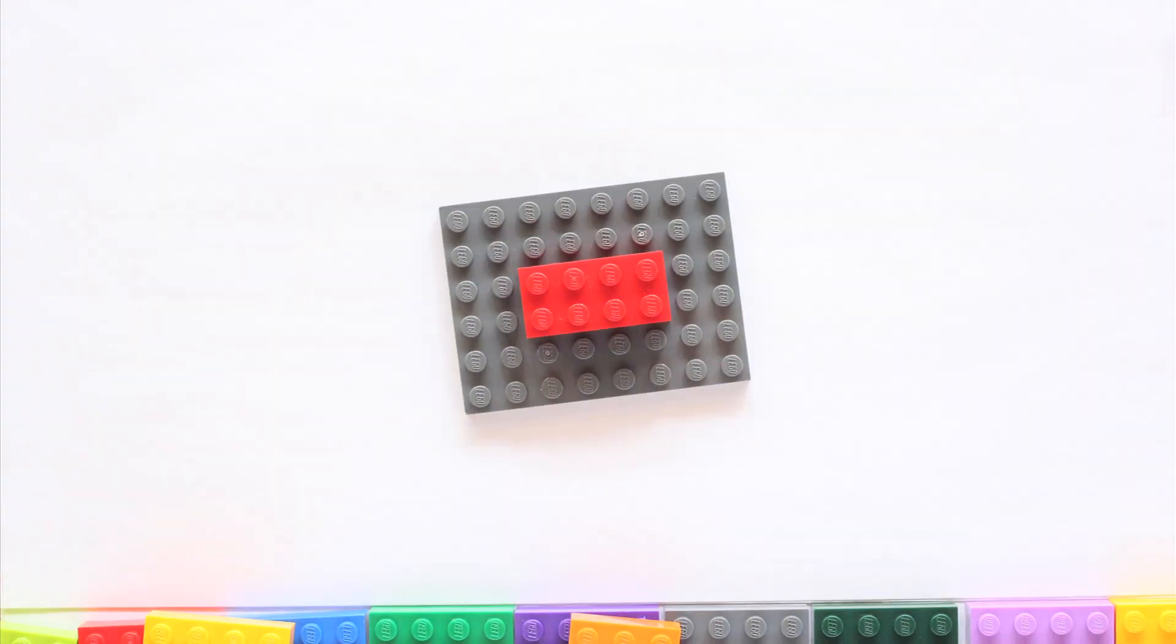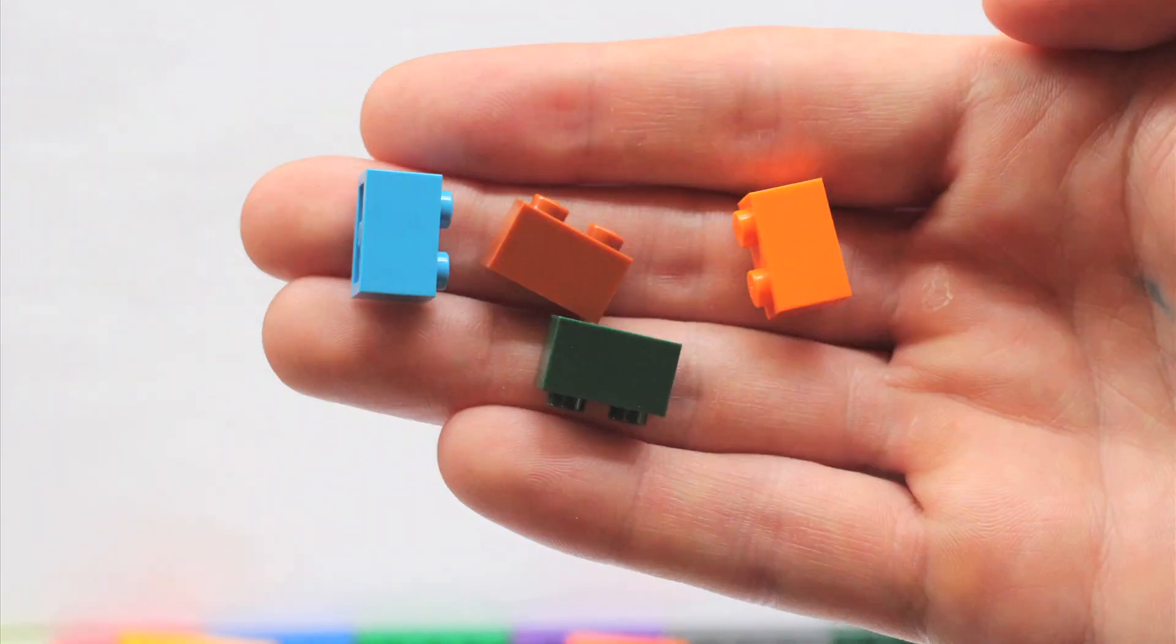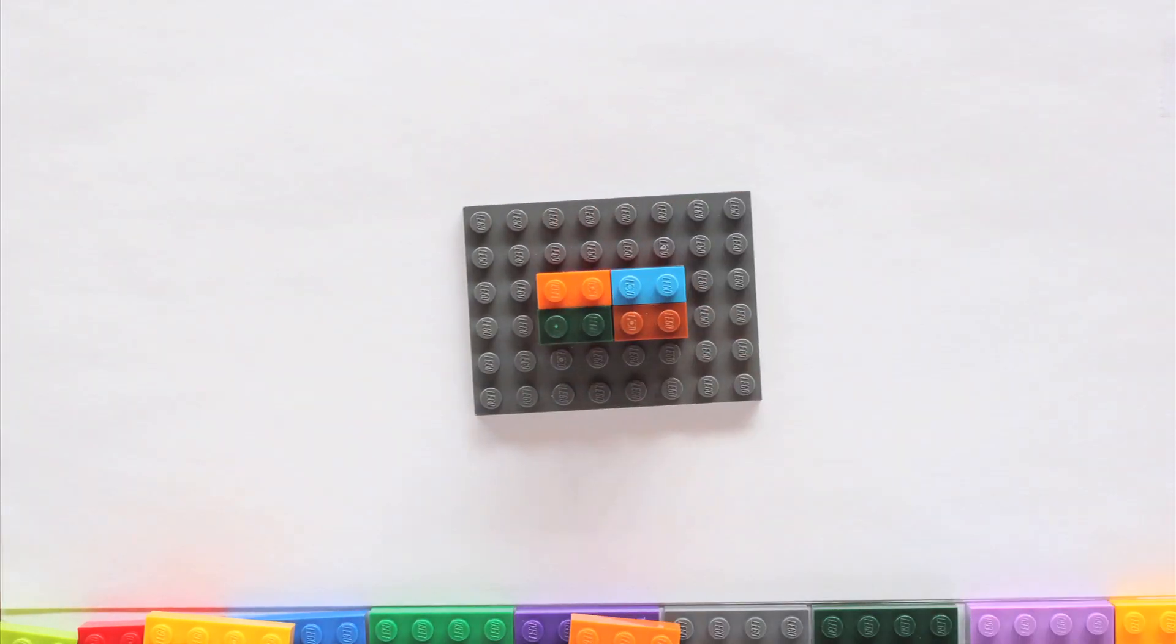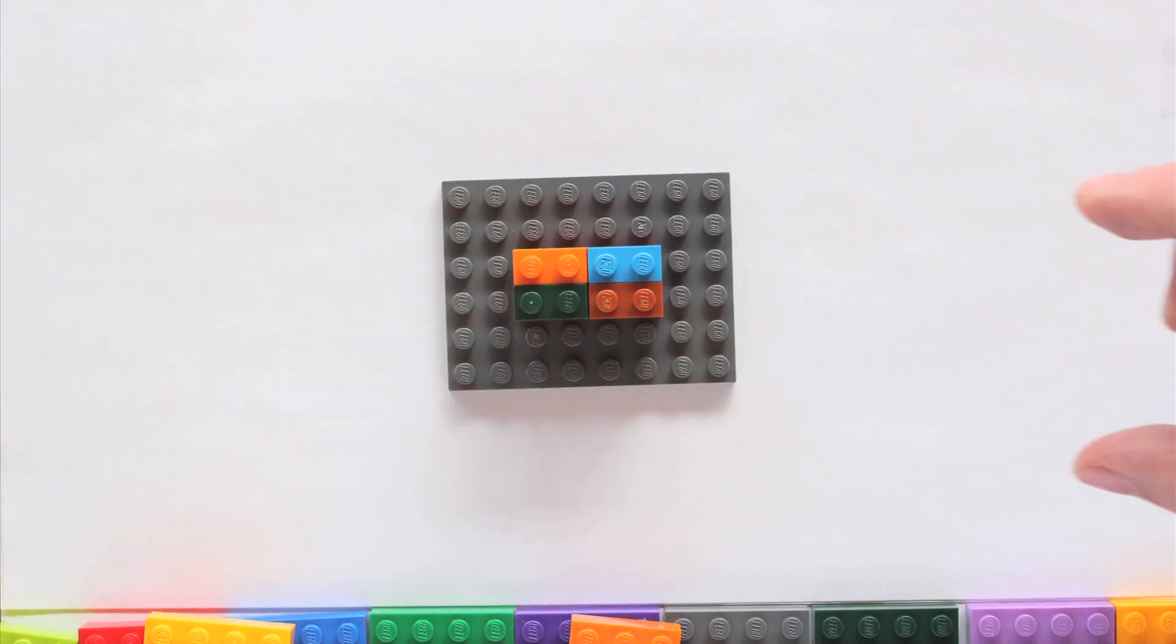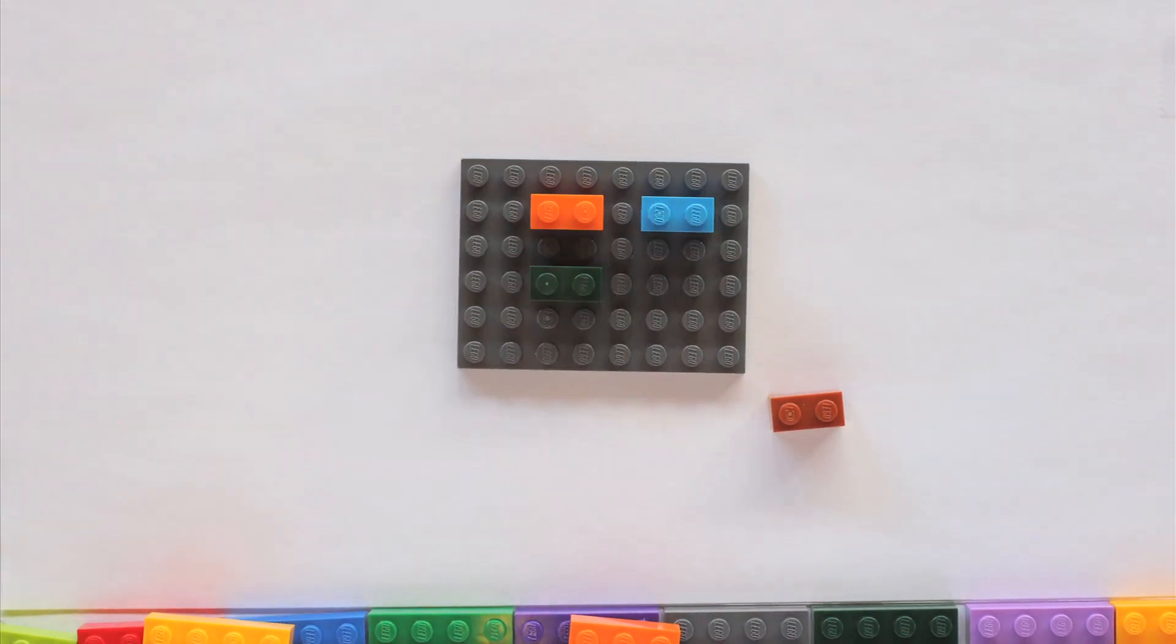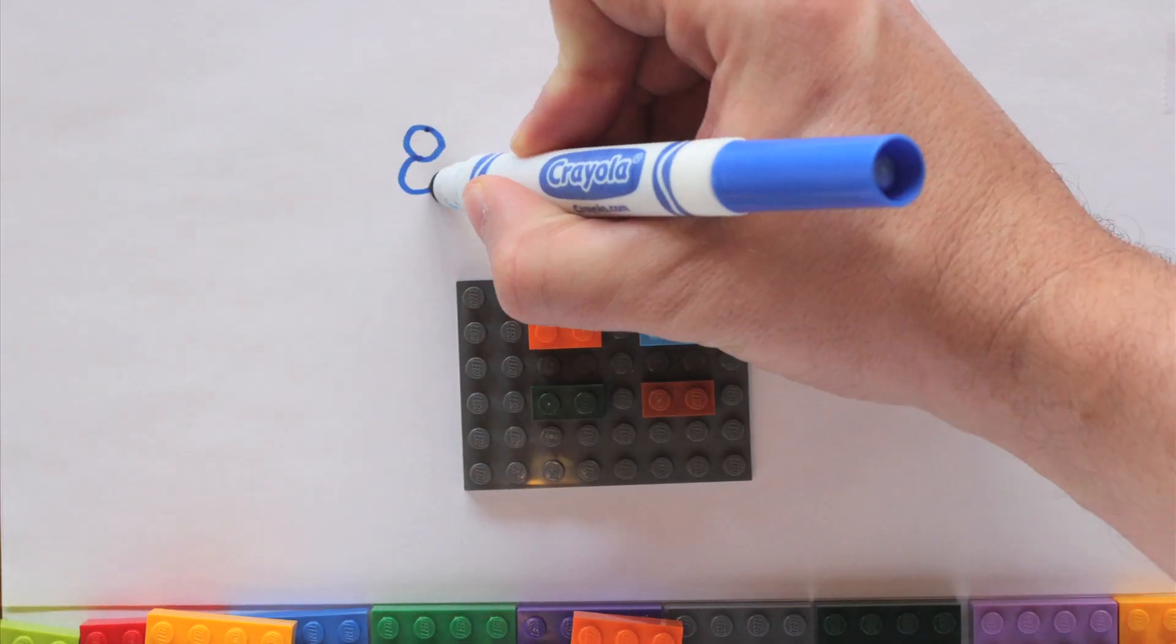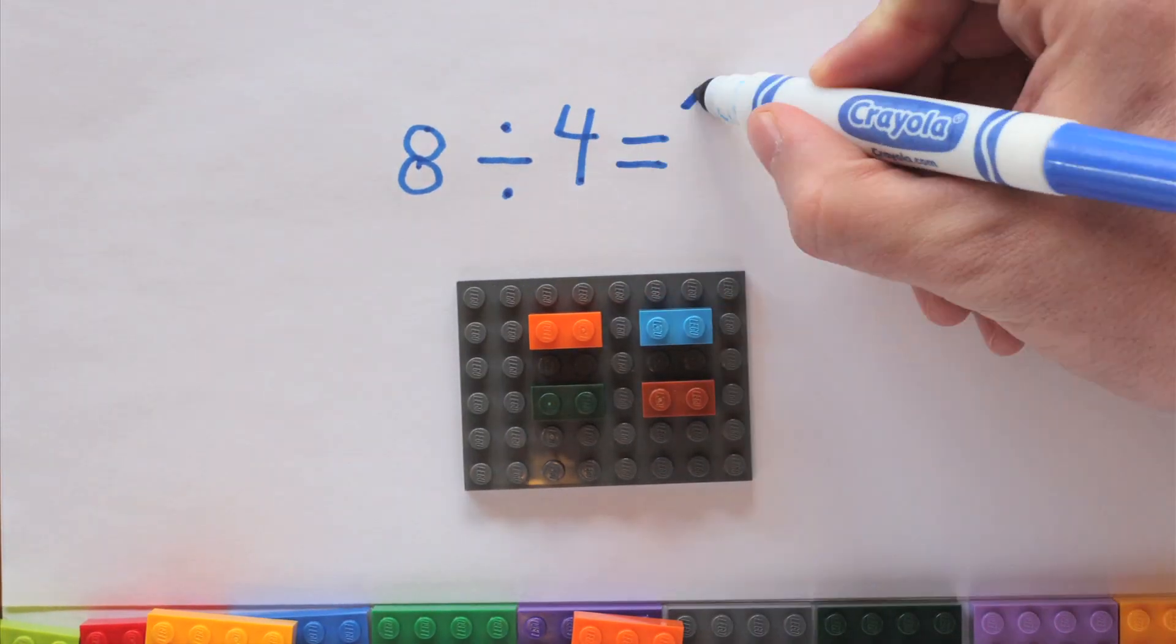For the next part of this exercise, place a 2x4 brick on a base plate. Ask students to find four bricks that can be placed on top of this brick with no studs uncovered. The answer is four 1x2 bricks. Ask students what this model shows about these numbers. 8 divided by 4 equals 2.